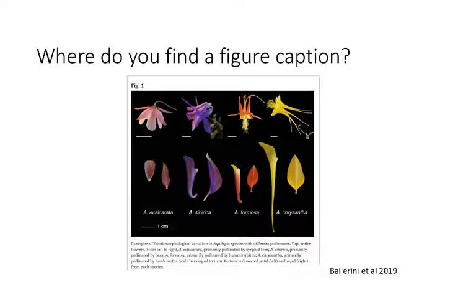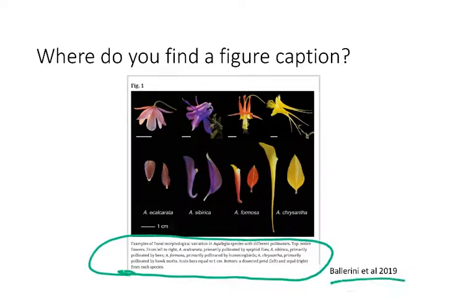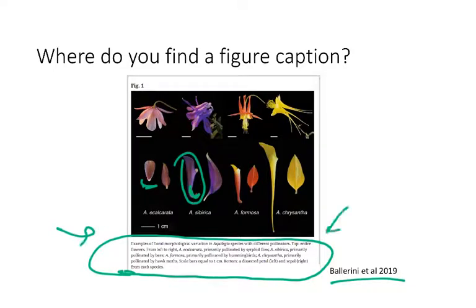Where do you find a figure caption? The figure caption is something that's located below the figure itself. This is an example from Ballerini et al. 2018. Some of these images may look familiar — this is very similar to what we did in a previous week where in class we were phenotyping different flowers and saying whether they had spurs or not. So this one has a spur, and this one does not have a spur. In general when you're looking for figure captions, those are the things located directly under the figure itself.